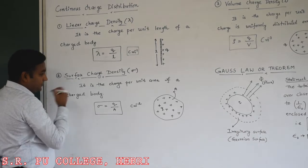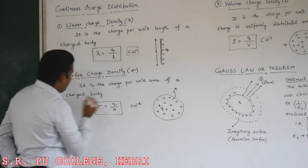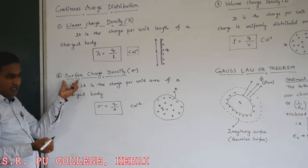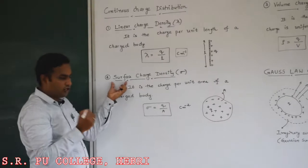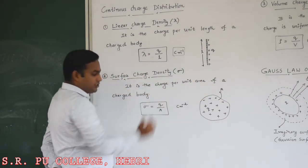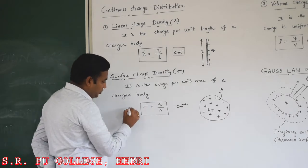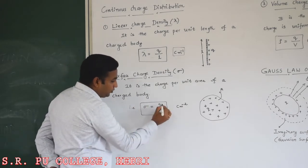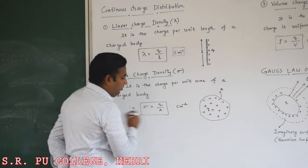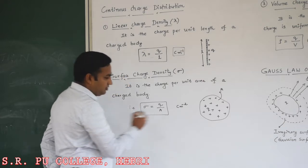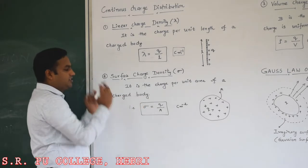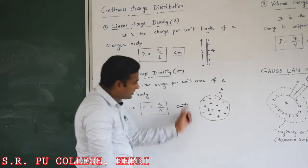The second important part is surface charge density, denoted by the letter sigma. It is defined as charge per unit area of a charged body. Surface charge density is the second part used to study Gauss law or Gauss theorem. Mathematically, we can write sigma equals Q divided by A, where Q is the charge and A is the area.